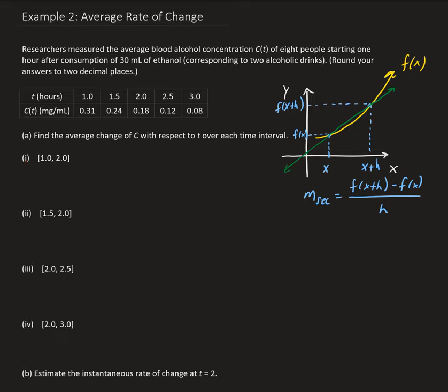For the first one, we have the change in blood alcohol concentration over time. This is going to be f of 2 minus f of 1, all divided by 2 minus 1. That's exactly the same idea as the slope of the secant line — we're finding the slope between the values at 1 and 2.